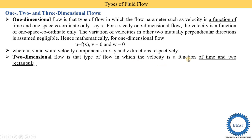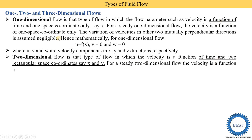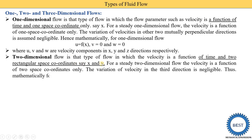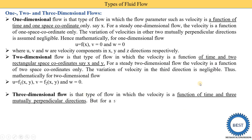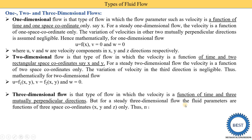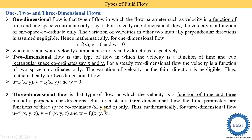Two-dimensional flow is that type in which velocity is a function of time and two space coordinates, say x and y. Velocity variation in the z direction is negligible. Mathematically: u = f₁(x,y), v = f₂(x,y), and w = 0. In three-dimensional flow, velocity is a function of all three space coordinates x, y, and z. Mathematically: u = f₁(x,y,z), v = f₂(x,y,z), and w = f₃(x,y,z).